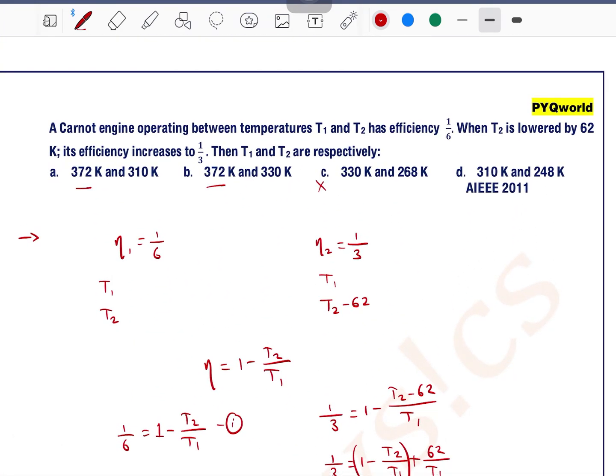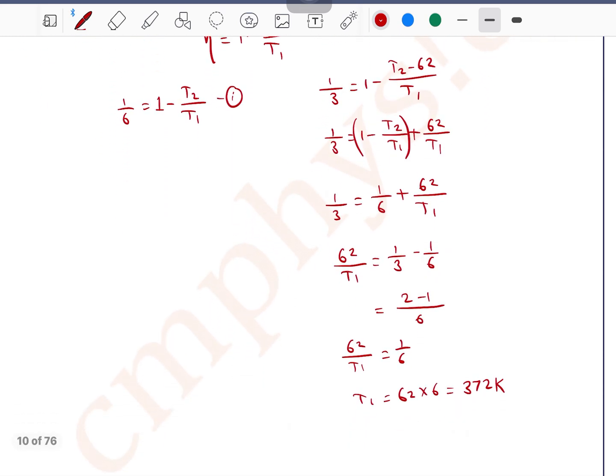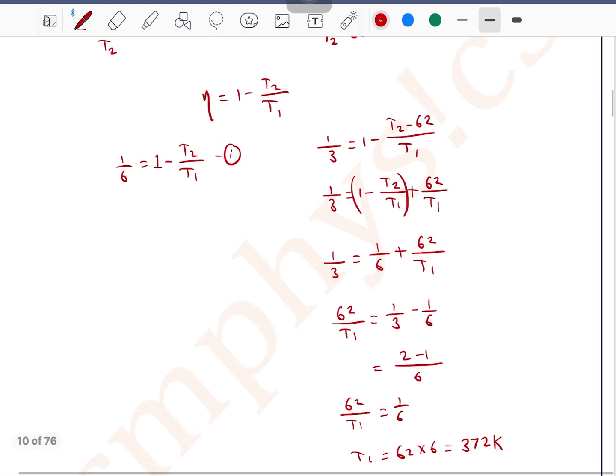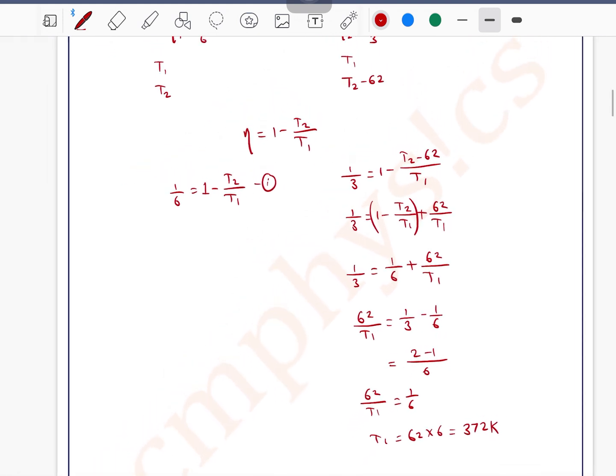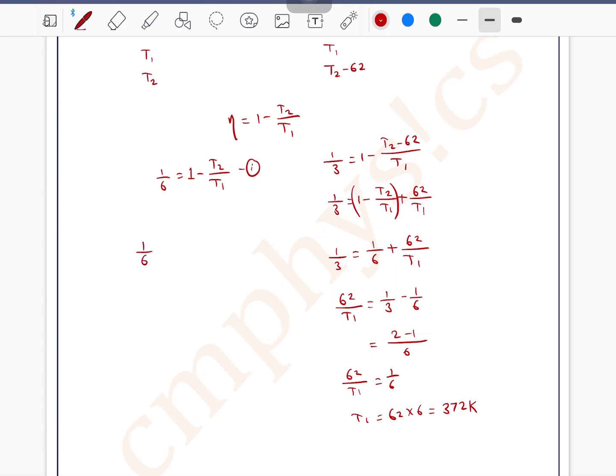T1 is 372. Option C and D are incorrect. Now we will find T2 here. To find T2, I will use equation number 1. I will write equation number 1. T2 by T1 is equal to 1 minus 1 by 6.